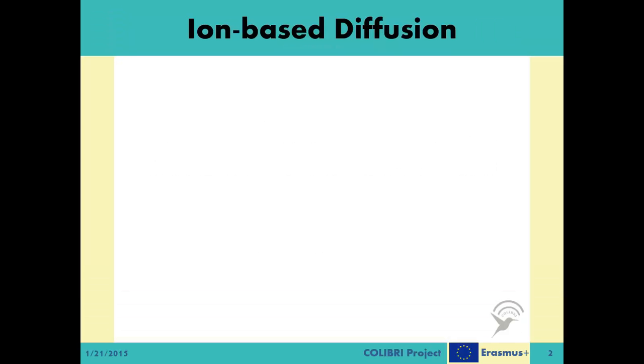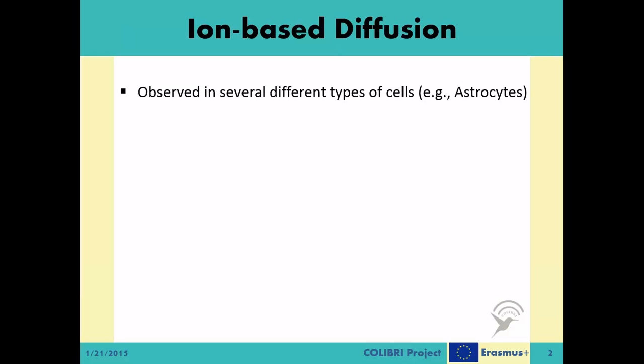As we described in the previous video, there are a variety of biological intercell communication mechanisms that rely on diffusion dynamics. A specific case of these diffusion-based intercell communication systems are ion-based diffusion systems. Ions are atoms or molecules with electrical charges like potassium and calcium ions. In living tissues, some cell types are observed to be communicating with each other via the usage of ions. A notable one of these cells are the astrocytes.